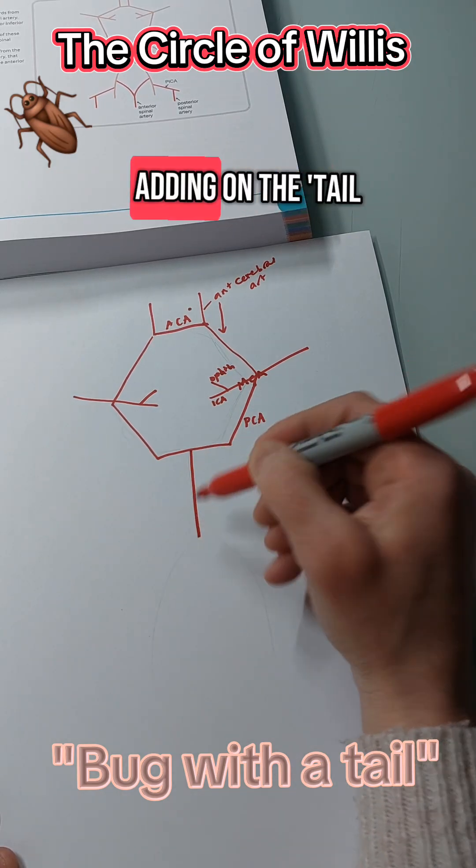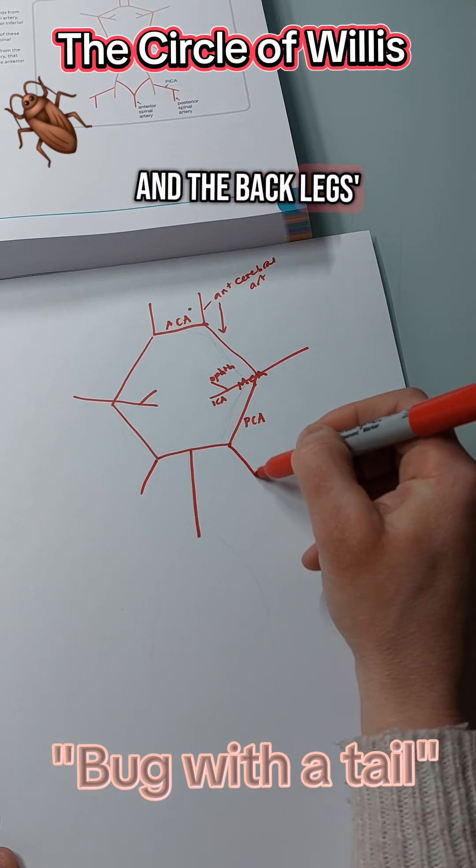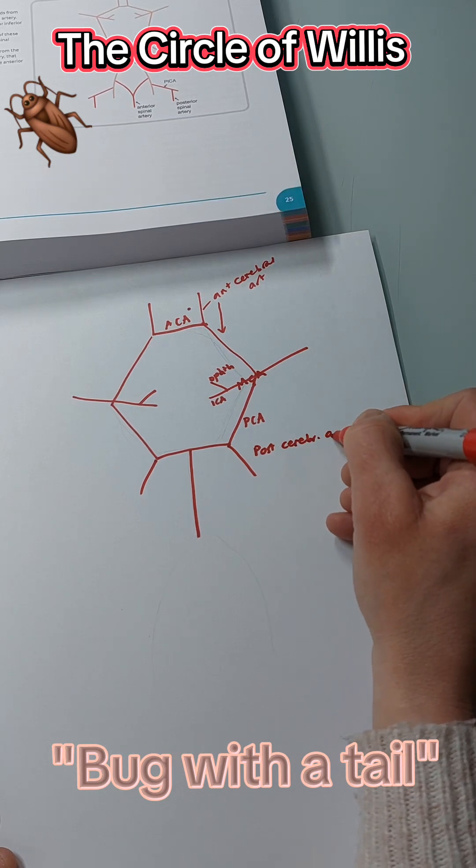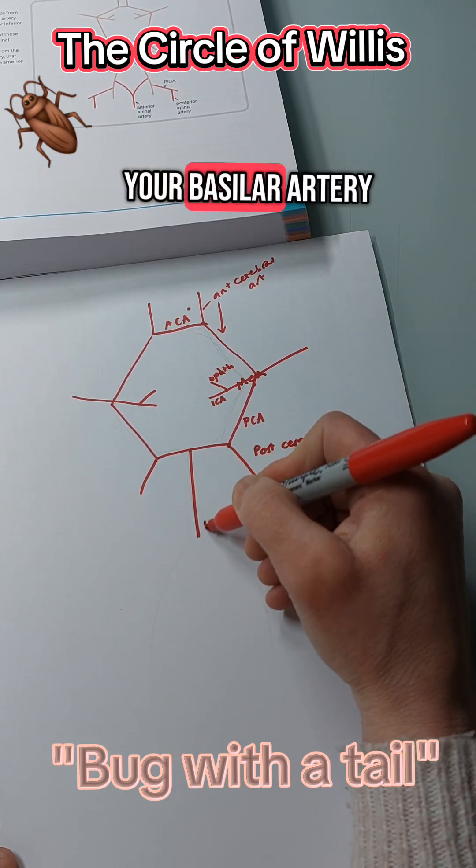Next, start by adding on the tail and the back legs. So this is your posterior cerebral artery, and this is your basilar artery.